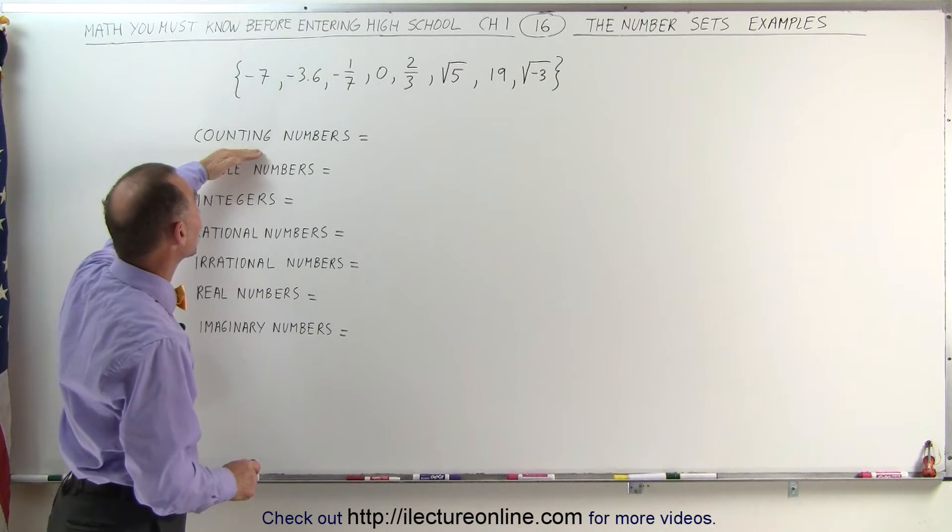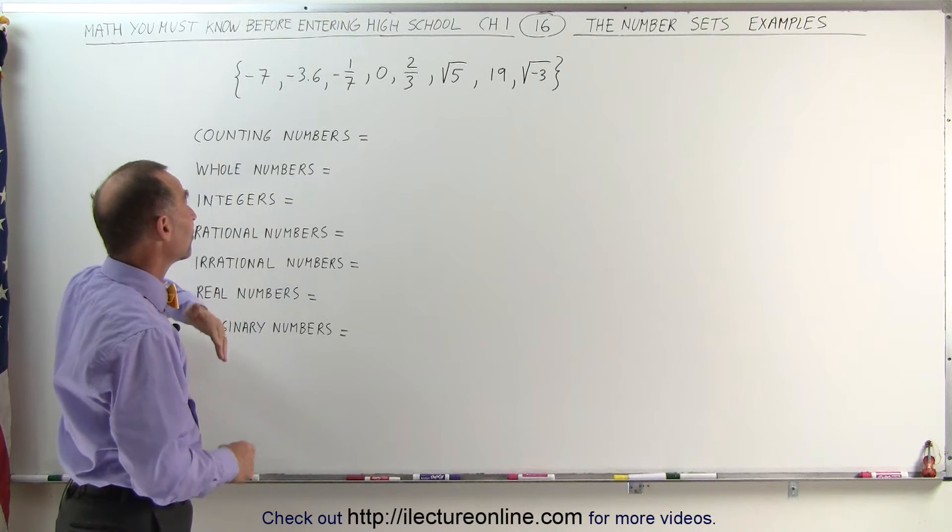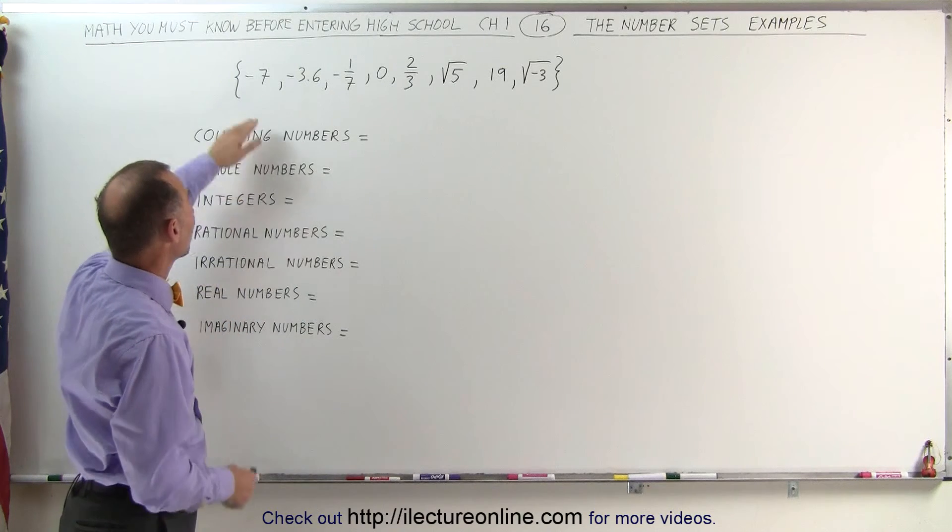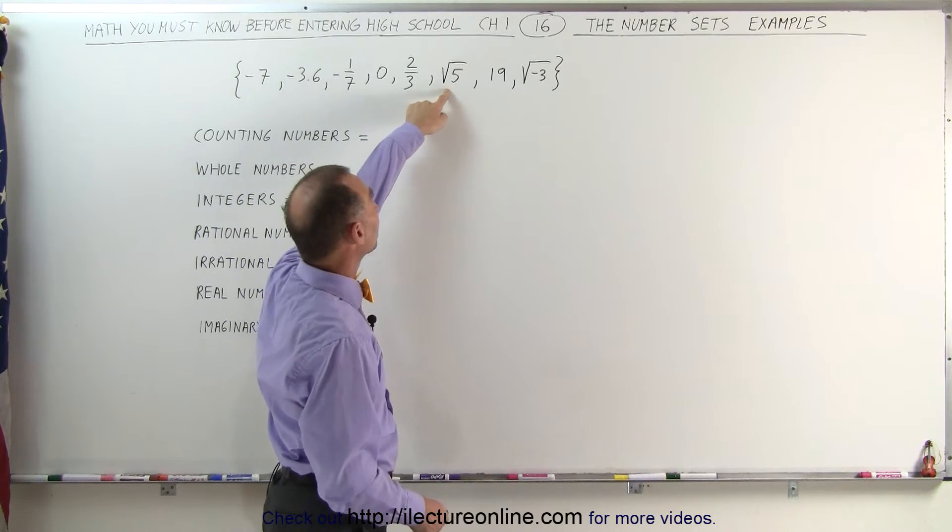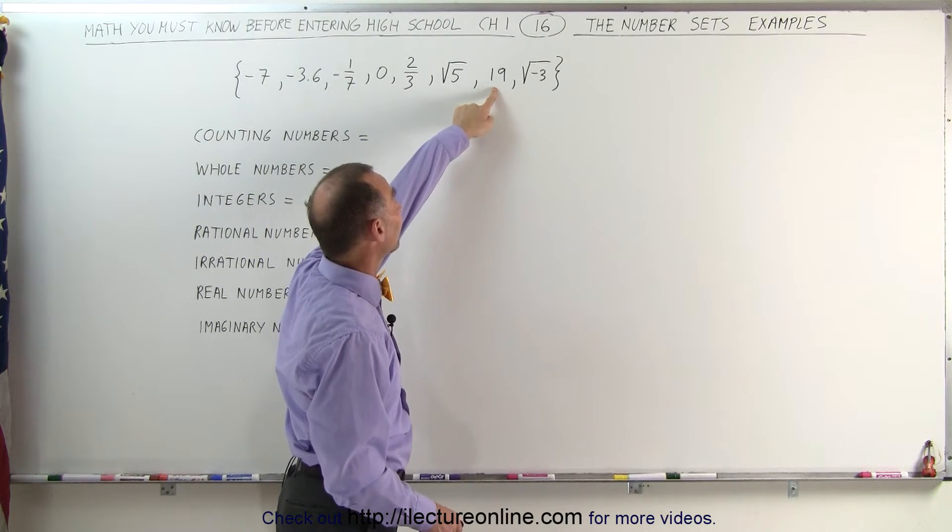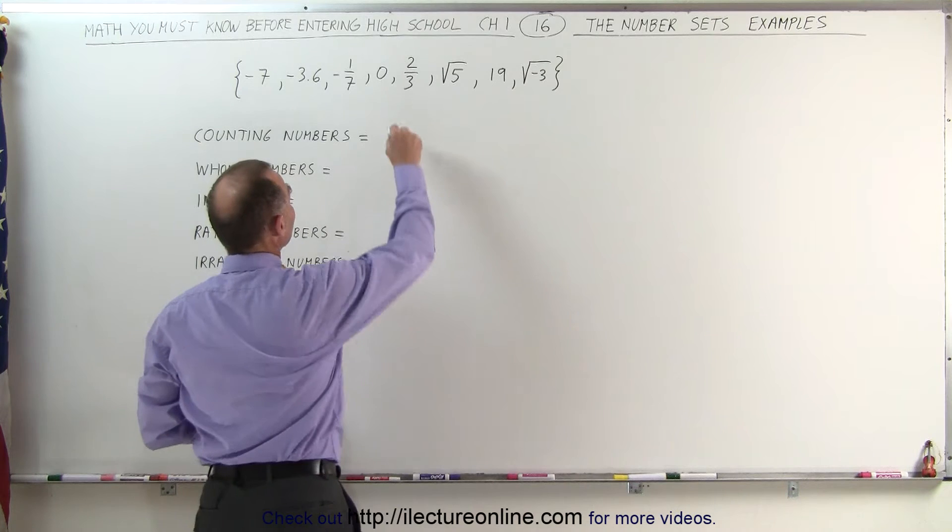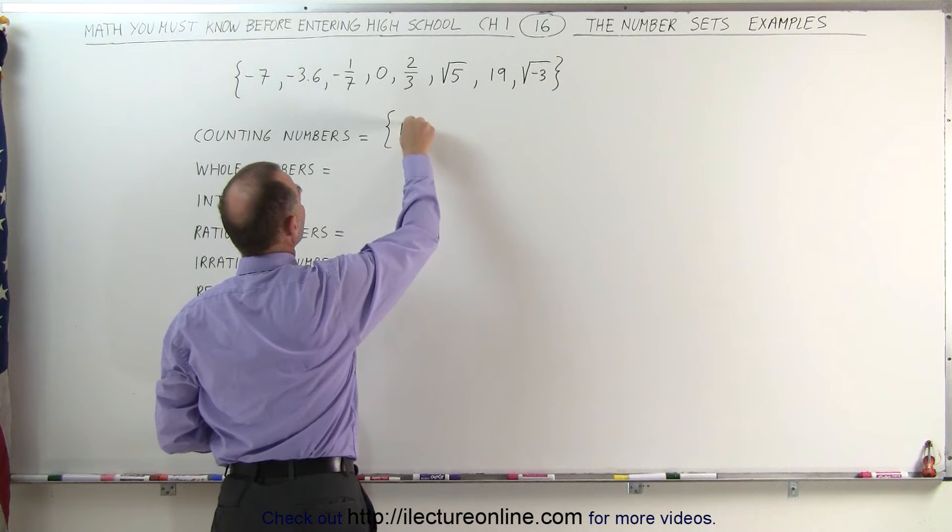Let's start with the counting numbers. Well, the numbers have to be greater than zero, so any negative numbers don't count. They cannot be fractions or radicals, so there's only one number here that fits, the number 19. That would be the set of counting numbers.